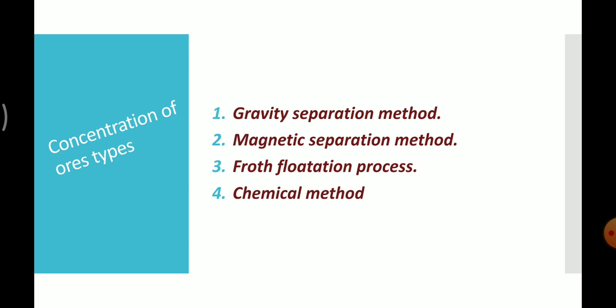The first method is gravity separation, nothing but hydraulic washing. This method is based on the difference in gravities of the ore and the gangue particles. For example, iron and tin ores are concentrated by this method.